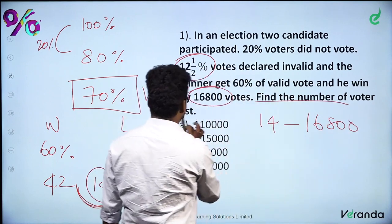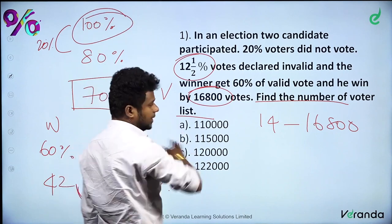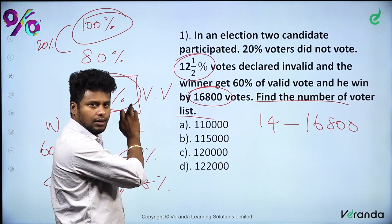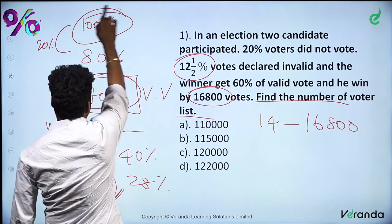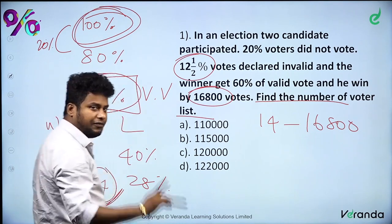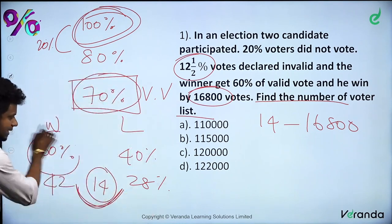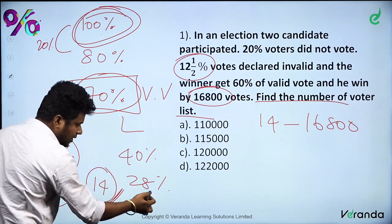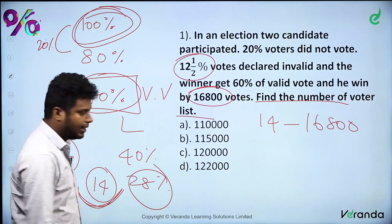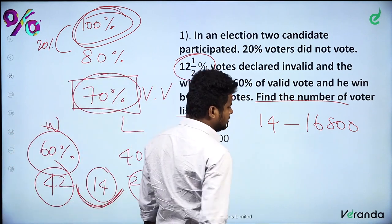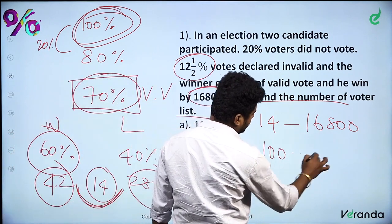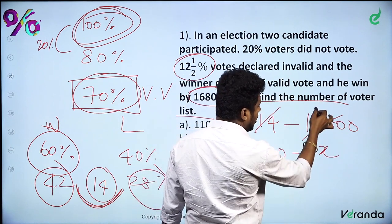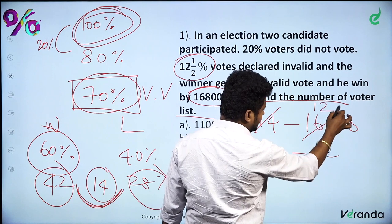Find the number of voters on the list. Total is 100. Winner is 60, giving 42. Loser is 28. So 14% is 16,800. 100% is what we need to find. So 14% = 16,800 means 100% = 1,20,000.